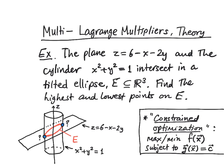The idea is that we want to either maximize or minimize some function f of x, which is real-valued, scalar-valued, so it's appropriate to talk about either maximizing or minimizing. Which one you want has to be specified in the actual problem — it could be both. There's a constraint which involves some other function g of x, which we set equal to some constant.